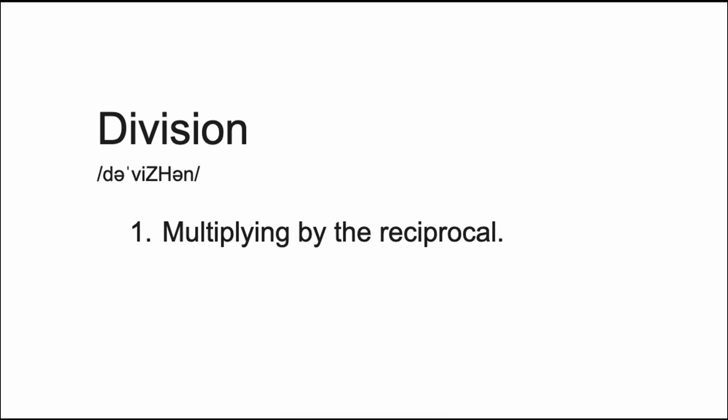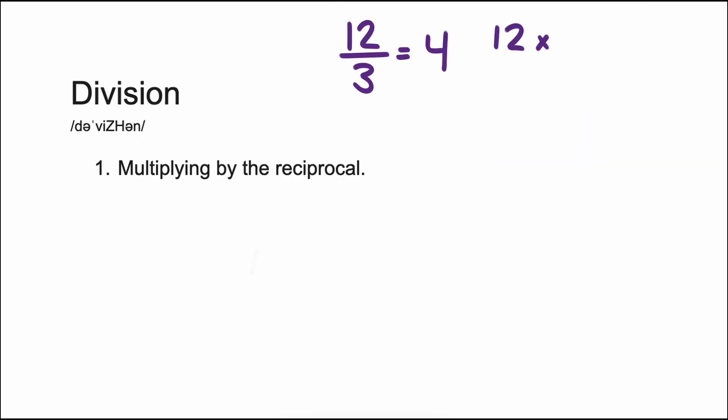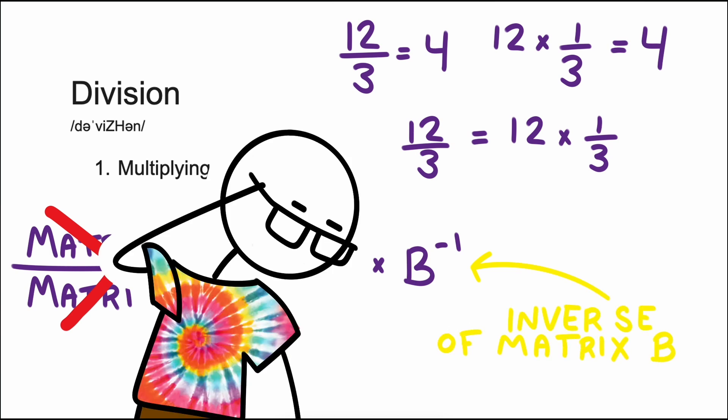To perform division on matrices we need to adopt a multiply by the reciprocal understanding of division. With numbers this would mean that rather than dividing by three we're thinking about multiplying by one-third. For matrices, rather than dividing matrix A by matrix B we would multiply matrix A by the inverse of matrix B. In order to do this we need to make sure matrix B is invertible.